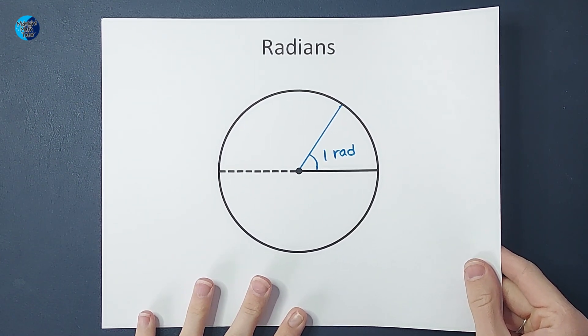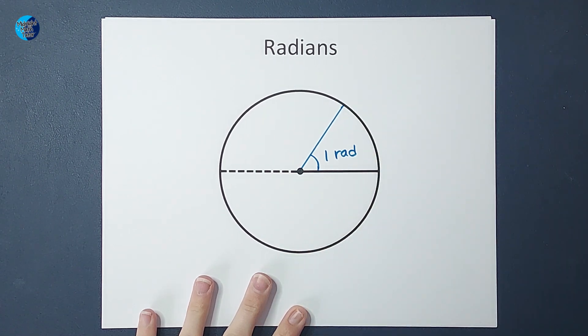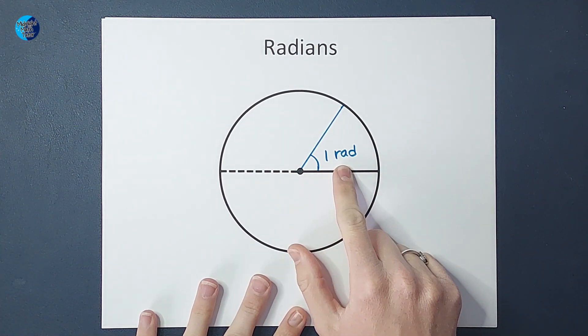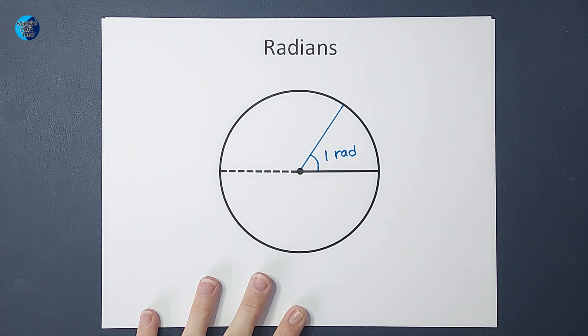So, my radius and this arc length are equal. This is considered one radian.